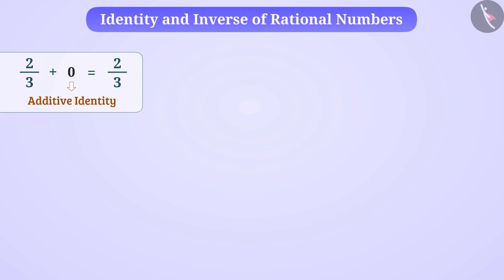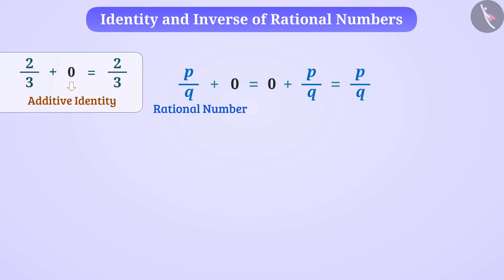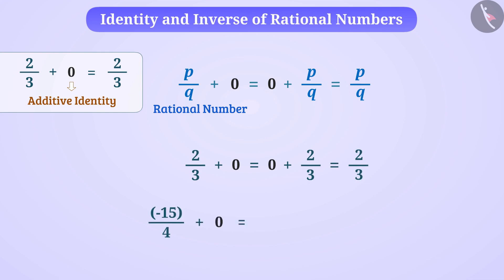We say that 0 is the additive identity for rational numbers. In brief, for rational number p/q: p/q + 0 = 0 + p/q = p/q. For example, 2/3 + 0 = 2/3, and (-15/4) + 0 = -15/4.